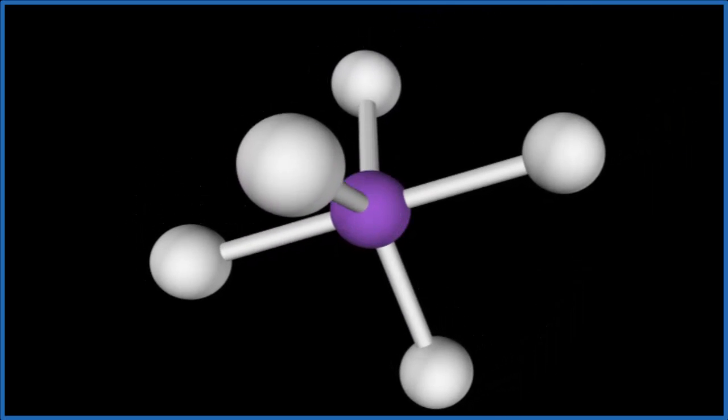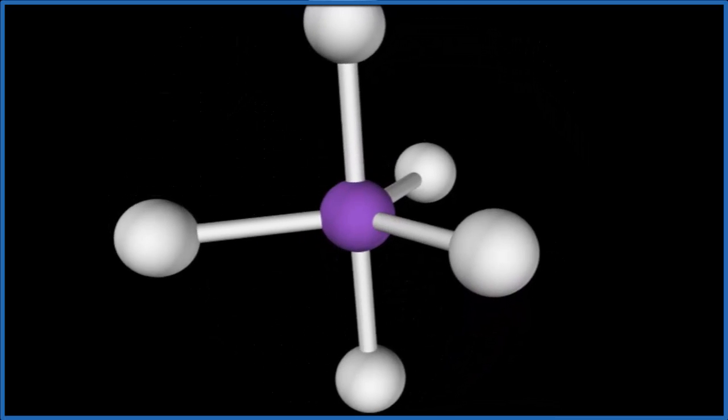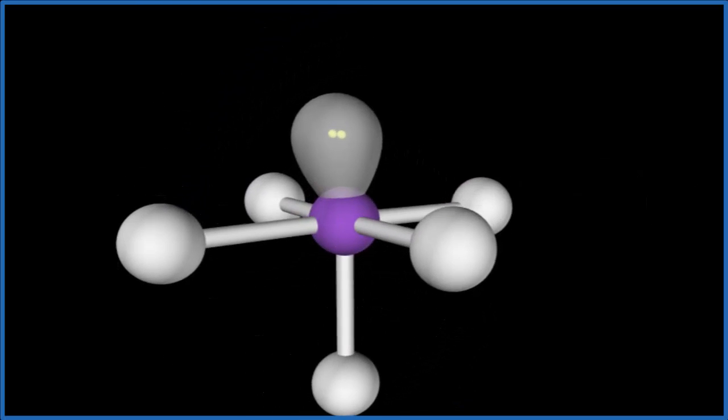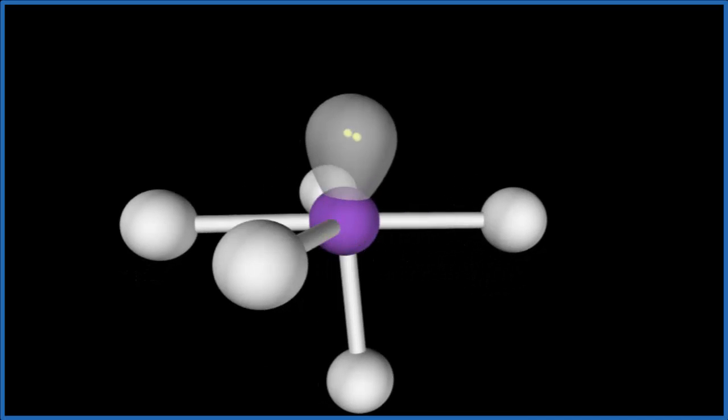This is five fluorine atoms here, but we do have to remember we have that lone pair on top. So let's add that lone pair in, and that ends up giving what we call a square pyramidal molecular geometry. You can see the square here, kind of a pyramid. So the molecular geometry is square pyramidal.